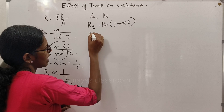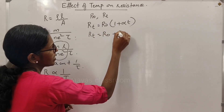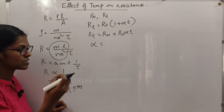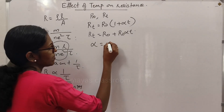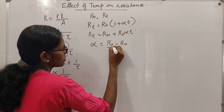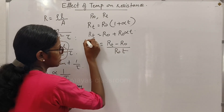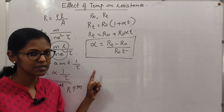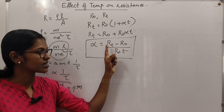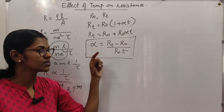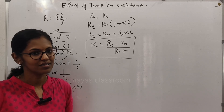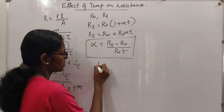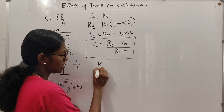We represent the equation as Rt equals R0 plus R0 into alpha T. The constant alpha is known as the temperature coefficient of resistance. It is given by alpha equals Rt minus R0, divided by R0 into T. The temperature coefficient of resistance is the ratio of the change in resistance per unit rise of temperature to the initial resistance. Its unit is Kelvin raised to minus 1.